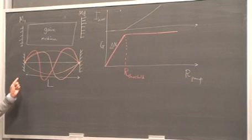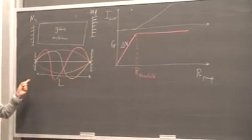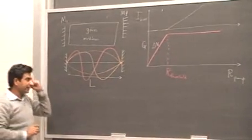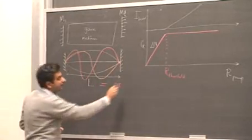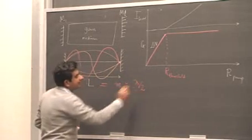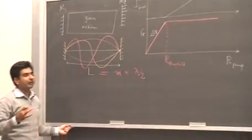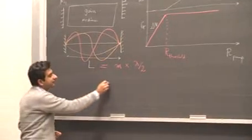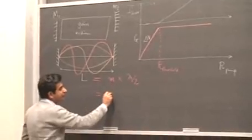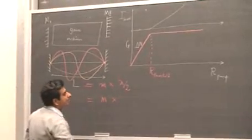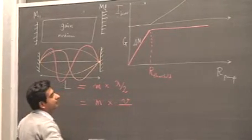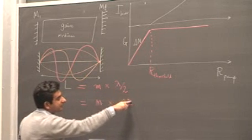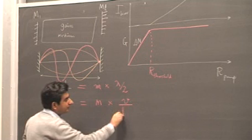Only precise frequencies can be excited in this cavity, and there is a precise relationship between the frequencies that can be excited and the length of the cavity. That relationship is that this length should be equal to an integer m times half the wavelength. This is a very simple formula. If we express this relationship in terms of frequency, we get that the integer m is multiplied by the speed of the wave V divided by the frequency F.